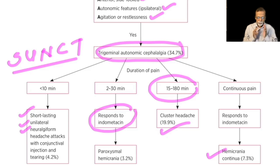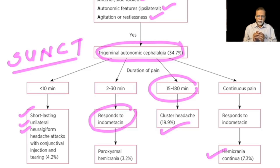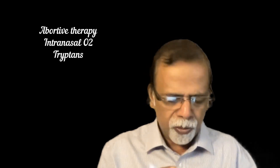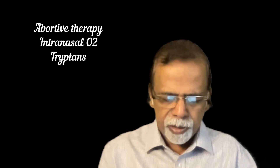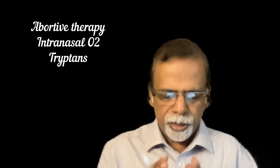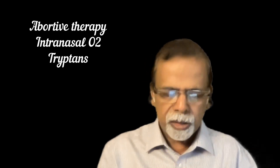Among the trigeminal autonomic cephalalgias, around 20 percent of cases are due to cluster headache. We have discussed the different types of trigeminal autonomic cephalalgias. Now let's move to the management of cluster headache. In acute management, there are two key drugs.